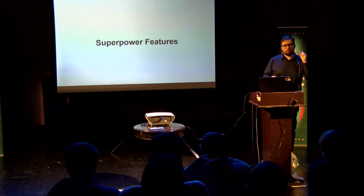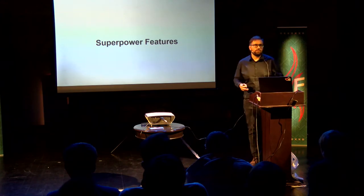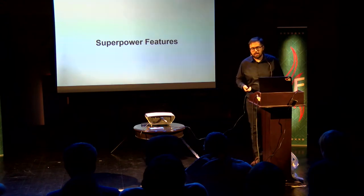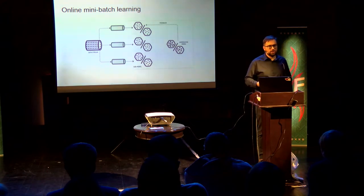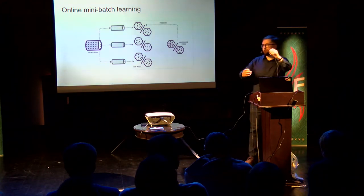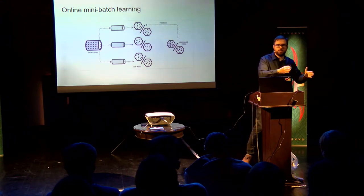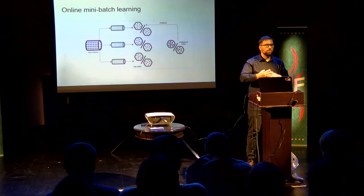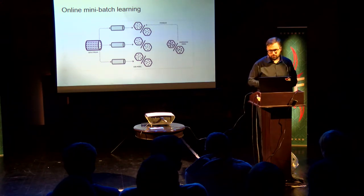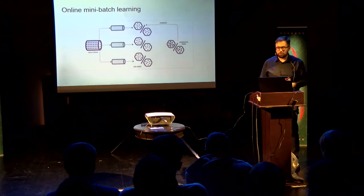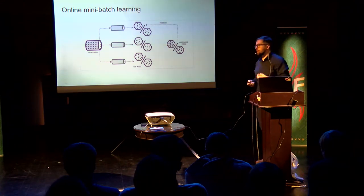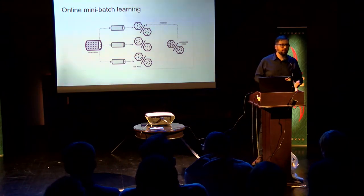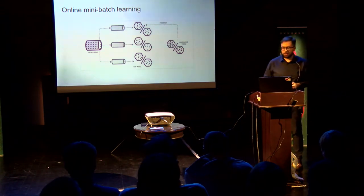We have one superpower feature that makes Ignite better than Spark: online mini-batch learning. We have one model trained on the first batch of data and a next model trained on the next batch, and we can merge them by a special law — you can define a custom law to combine them into one model. This gives users the ability to make an online learning pipeline. It's an experimental feature now, but in the future it can be used as a production feature too.